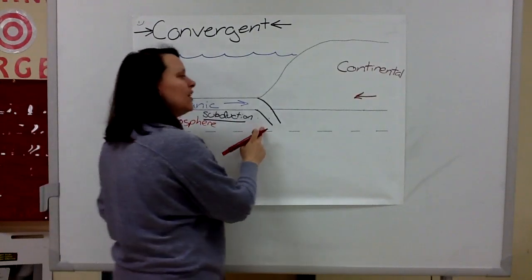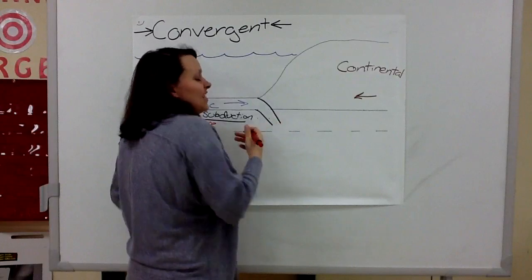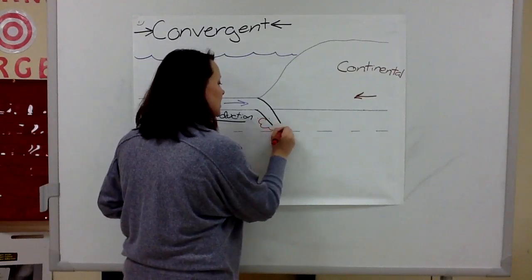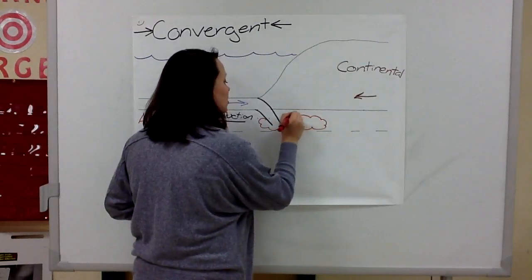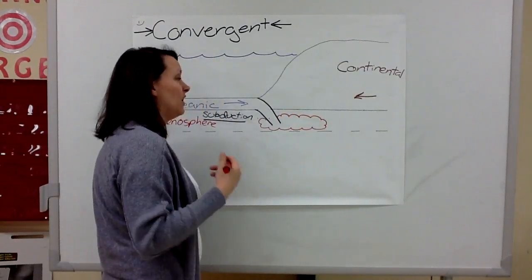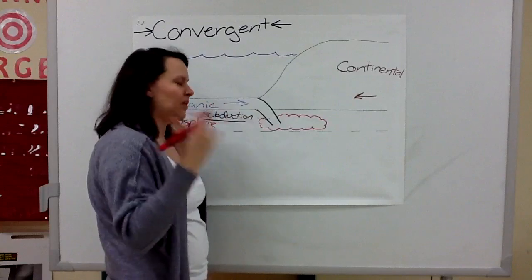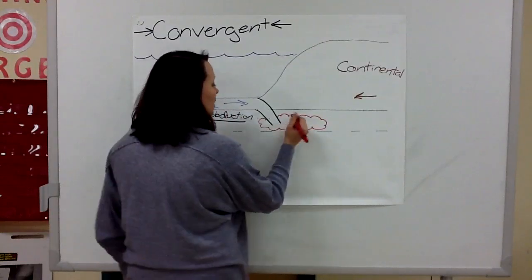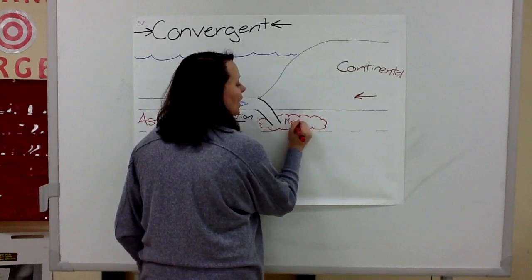Now once here, it begins to heat up and melt. This process is actually kind of complicated. It involves ocean water and the amount of material in it. It melts, and when it melts, it makes magma.